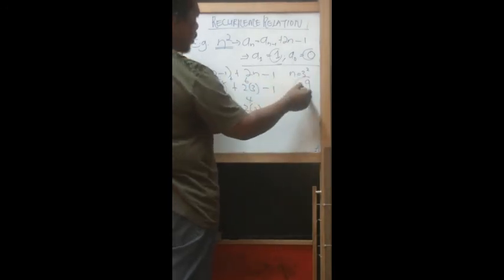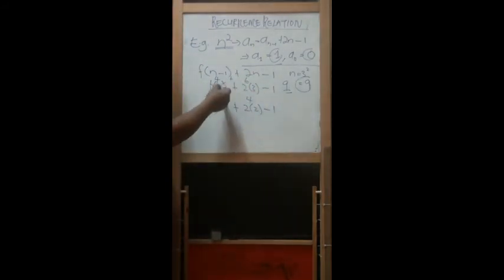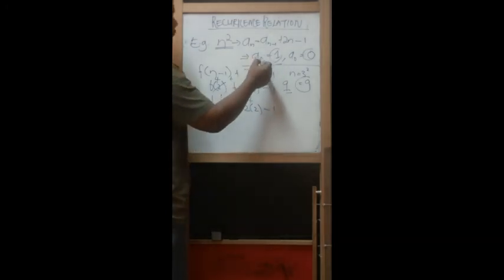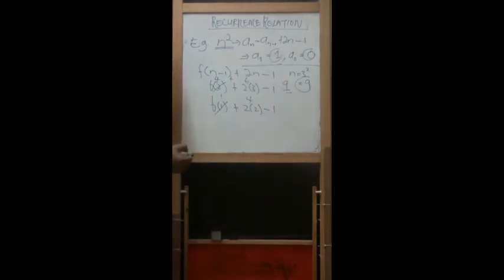This is the concept of recurrence relation where basically we reduce 1 by 1, minus 1, minus 1, until stopping criteria. The stopping criteria for this case is actually 1 or 0.